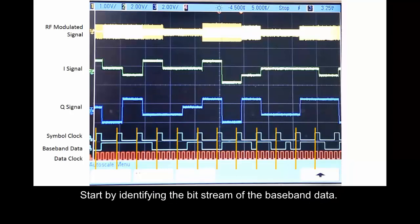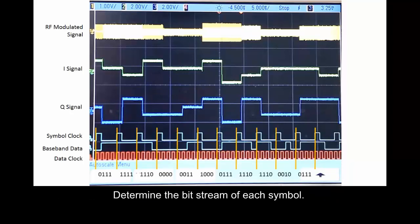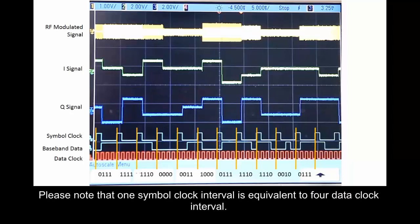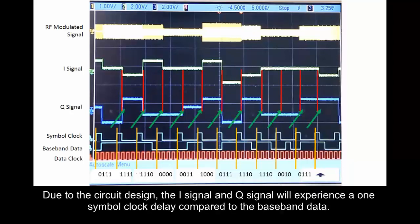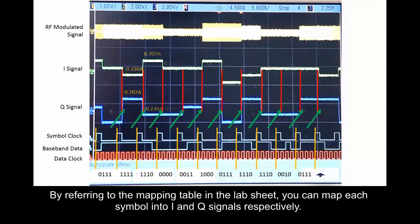Start by identifying the bit stream of the baseband data. Determine the bit stream of each symbol. Please note that one symbol clock interval is equivalent to 4 data clock intervals. Due to the circuit design, the I signal and Q signal will experience a 1 symbol clock delay compared to the baseband data. By referring to the mapping table in the lab sheet, you can map each symbol into I and Q signals respectively.